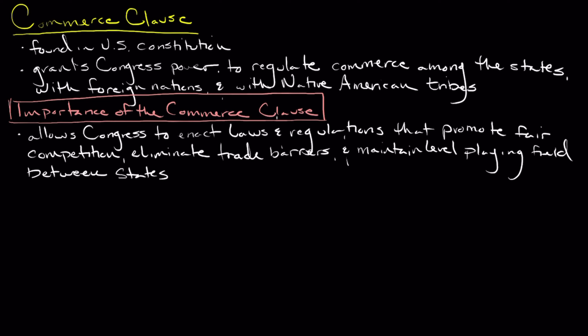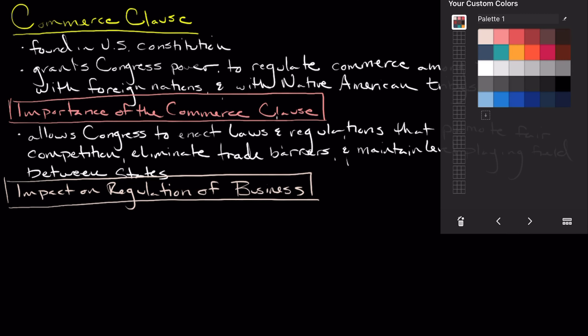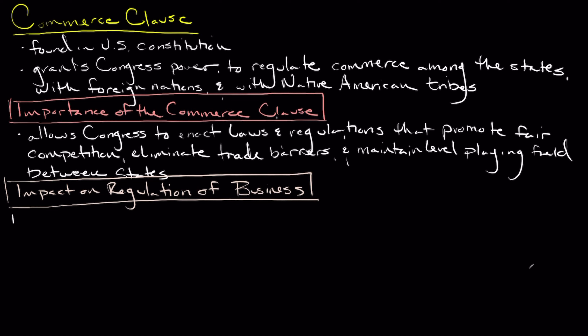This authority extends to various aspects of business operations including labor standards, environmental regulations, transportation, and telecommunications. Now that you understand a little bit about the Commerce Clause and its importance, we're going to explore some of the different ways that it affects how the government regulates businesses.